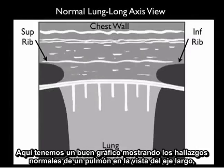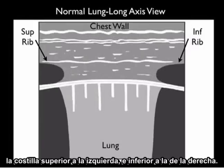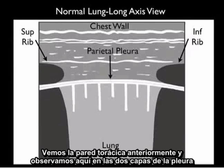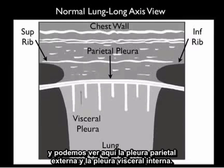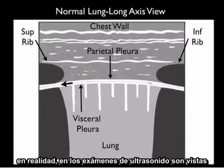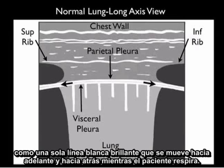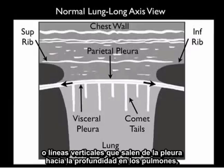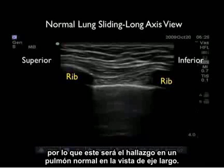Here's a pictorial showing the normal findings of a lung in a long axis configuration. Superior rib to the left, inferior rib to the right. Notice that the ribs cast shadows posteriorly due to the inability of the sound waves to permeate the hard calcifications of the rib. We see the chest wall anteriorly and note the two layers of the pleura — the outer parietal pleura and the inner visceral pleura. While depicted as two separate layers, in reality on ultrasound examination they're seen as a single shimmering white line that moves back and forth as the patient breathes. As the patient breathes, we can see white comet tails — vertical lines coming off the pleura down deep into the lung. That will be the normal finding of a lung on long axis configuration.